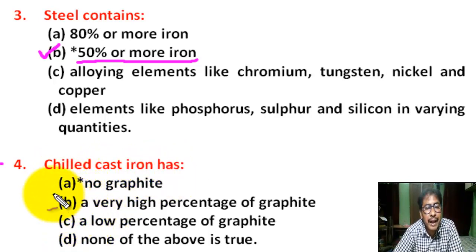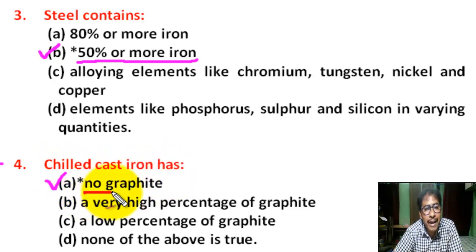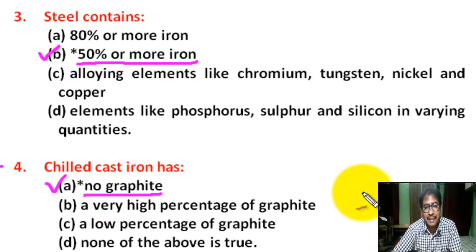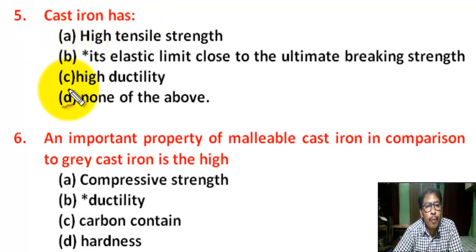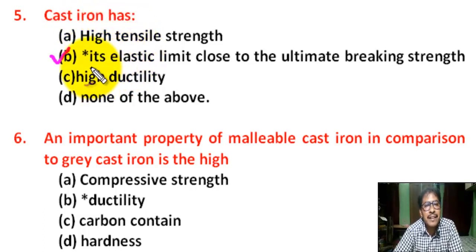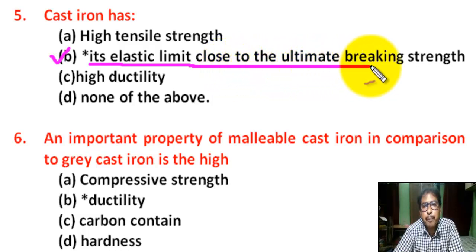Question number four: chilled cast iron has — correct answer is A — chilled cast iron has no graphite. Question number five: cast iron — correct answer is B — cast iron has its elastic limit close to the ultimate breaking strength.